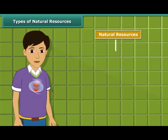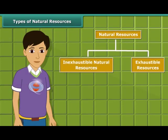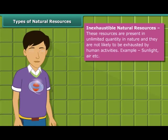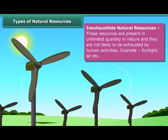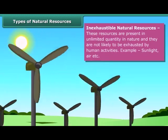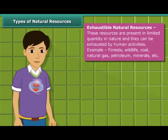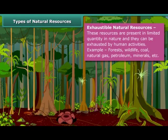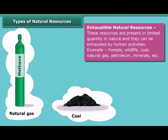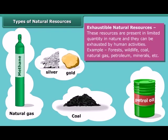Natural resources can be broadly classified into two categories. Inexhaustible natural resources are present in abundance, hence it is unlikely that they will be exhausted by any human activity — sunlight and air are examples. On the other hand, the amount of exhaustible resources is limited and they can be exhausted by human activities. Forests, wildlife, coal, natural gas, petroleum, and minerals are examples of these resources.